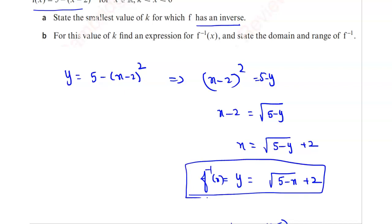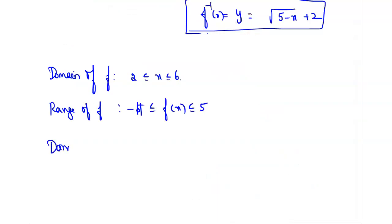Now we need to find the domain and range. From this we know that the domain of f⁻¹ is the range of f, so it will be -11 ≤ f(x) ≤ 5. And the range of f⁻¹ is the domain of f, so it is 2 ≤ x ≤ 6. So this is the domain and range of this function.